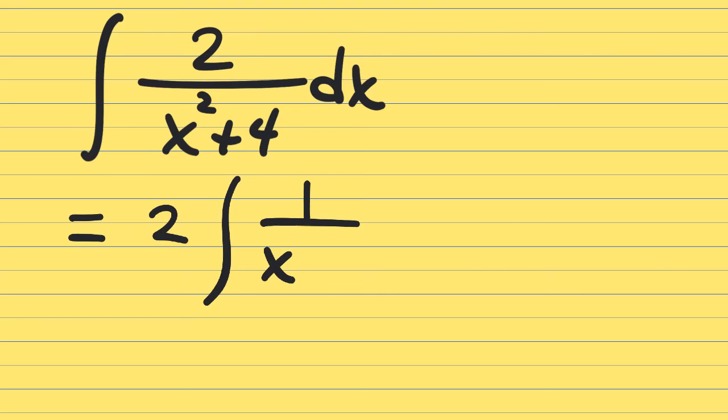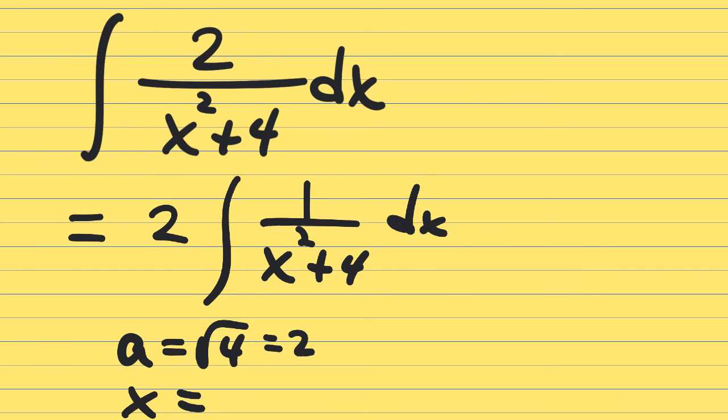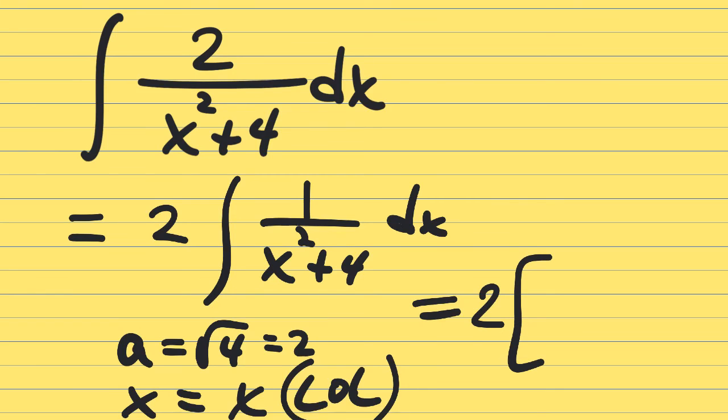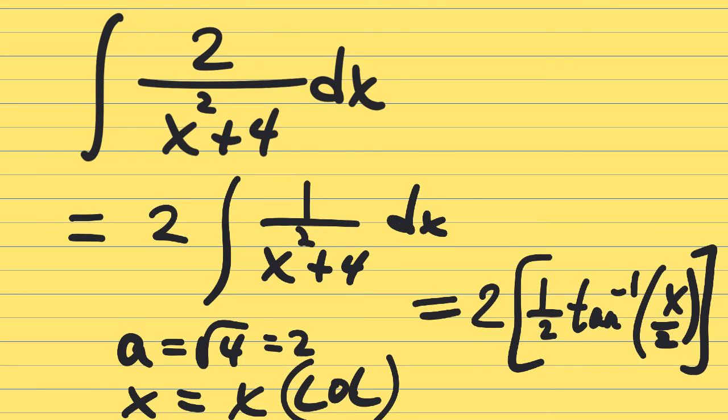This will put it in the format from that second slide. Your constant a is the square root of 4, which is 2. The antiderivative is 2 times 1 over a, which is a half, tan inverse x over a plus c.